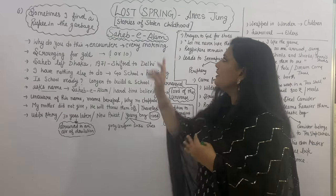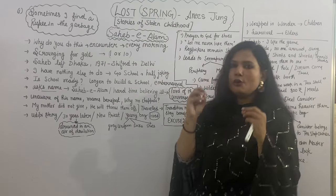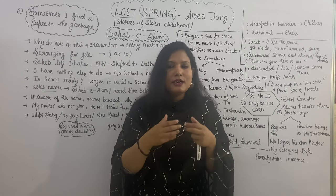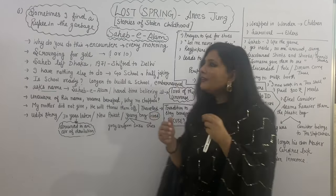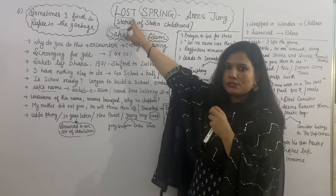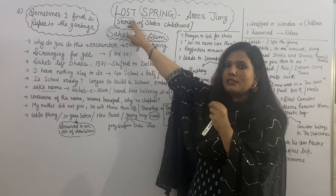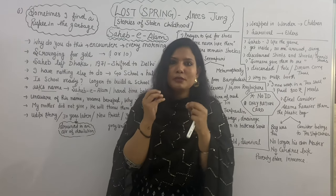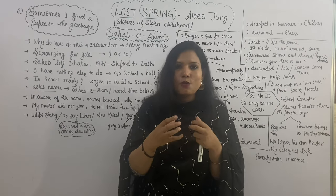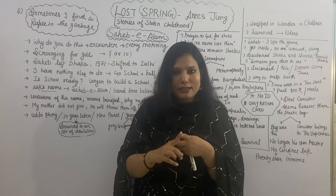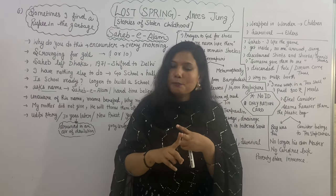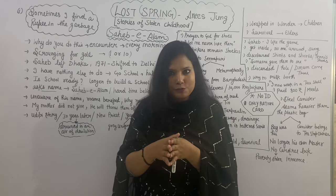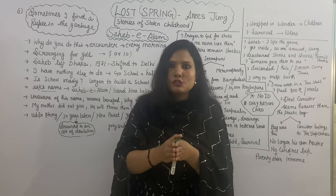Look at the title Lost Spring. Here spring is denoting or referring to childhood and the happiness, the innocence that you have when you are a child. Now that happiness, that childhood is lost, and poverty is something that has stolen the childhood. So in this chapter she is talking about the poverty, the impoverished conditions of these two boys. The first one is Saheb-e-Alam, the second one is Mukesh. In this video I am going to give you the explanation of Saheb-e-Alam first, then we will move further to Mukesh's story.